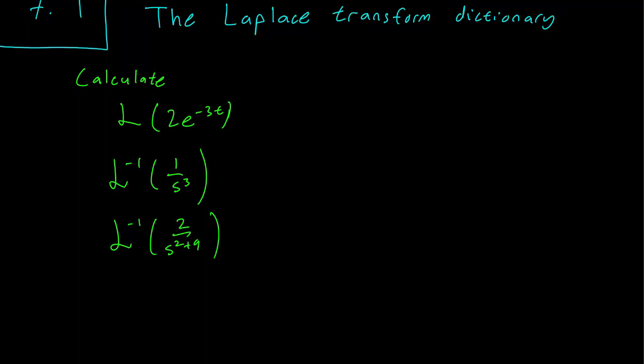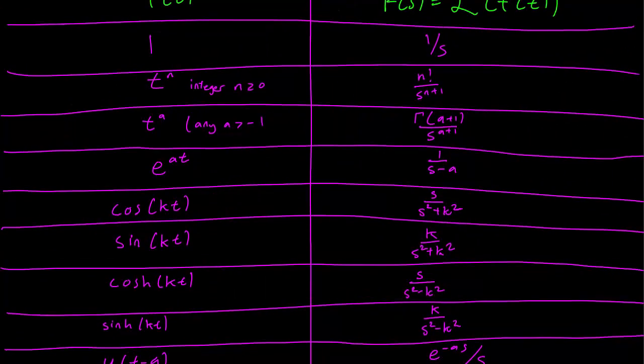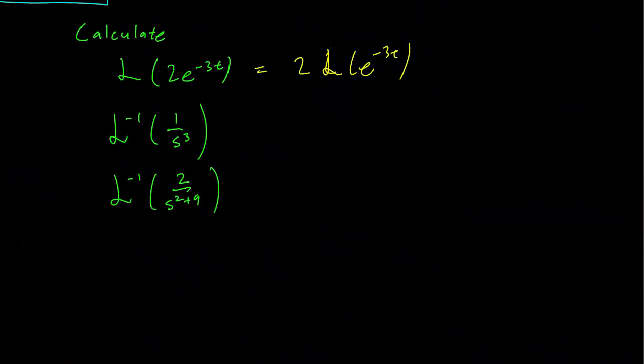If you want to calculate the Laplace Transform of 2e^(-3t), you would just write down the function like this and look at the table. We see that we want to use the e^(at) column here and that translates to 1/(s-a). In our case, a is going to be minus 3. So we have just 2 times 1 over s plus 3.